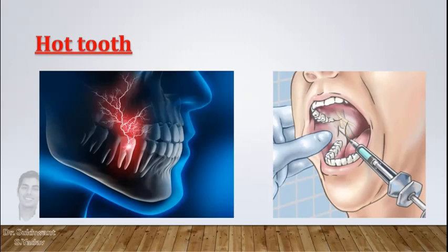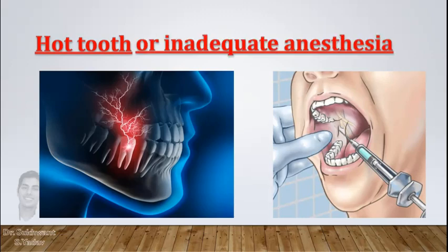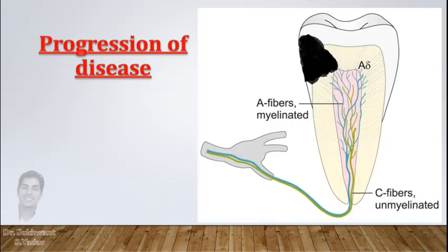But these all can be failed attempts to achieve the desired anesthesia. So to differentiate between the hot tooth and inadequate anesthesia, you need to understand about the progression of pulp inflammation a little.